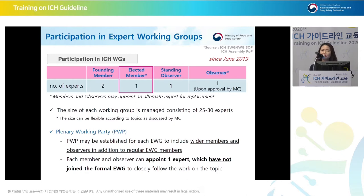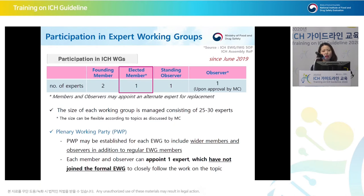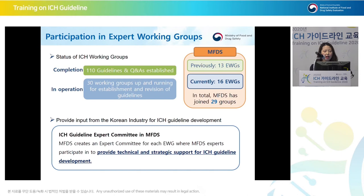In the past, all management committee members could recommend two members for the EWG. But now founding members can only recommend two, and other members can recommend one. For those not able to participate in the EWG, the PWP, or Plenary Working Party, was created so that members and observers can understand how the process is being done and follow the development of guidelines, even though they are not EWG members themselves.